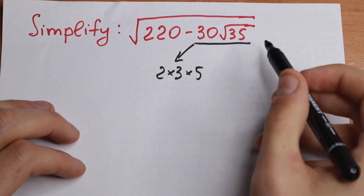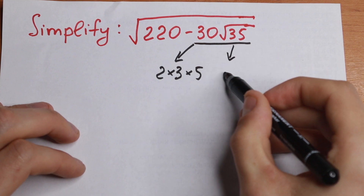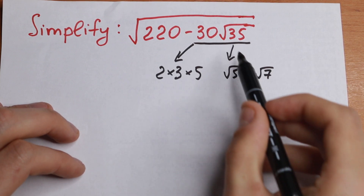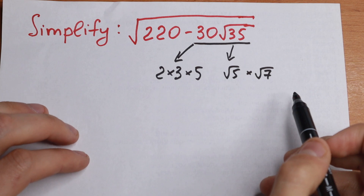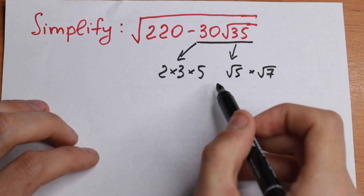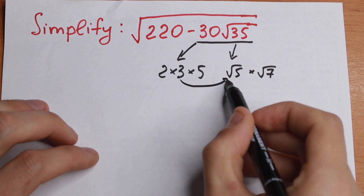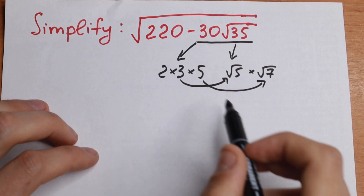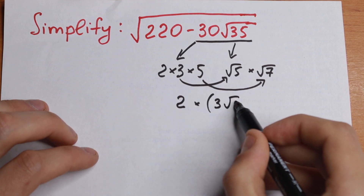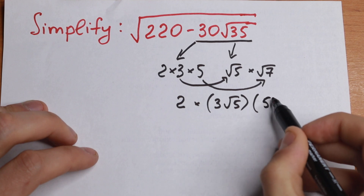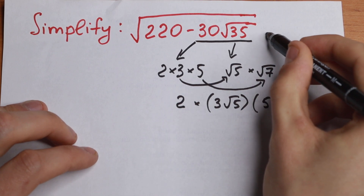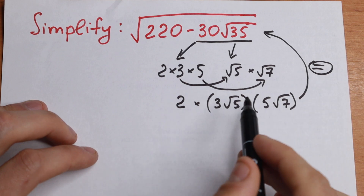And the square root of 35 — it's really good to write as square root of 5 times square root of 7. So I write square root of 35 as square root of 5 and square root of 7. Now I want to regroup all these numbers, because right here we have a product, so we can group them. Let's group, for example, 3 with square root of 5, and 5 with square root of 7. So as a result, this can be written as 2 times (3√5) times (5√7). We just regroup — nothing has changed; it's just rewritten in another way.